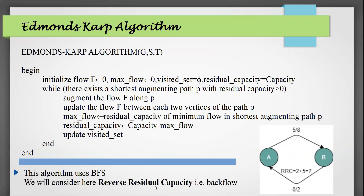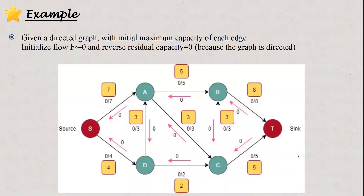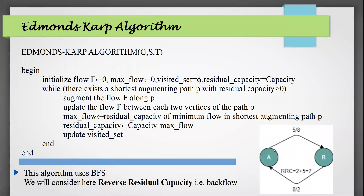We also consider the reverse residual capacity, which is the backflow. In the given figure, from A to B the flow is 5 and capacity is 8. From B to A, the flow is 0 and capacity is 2. The reverse residual capacity from B to A is 2 plus 5 which equals 7, because we could redirect those 5 units of flow from A to B.